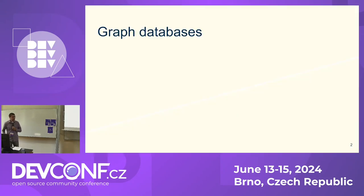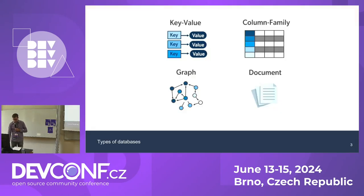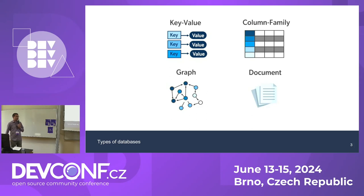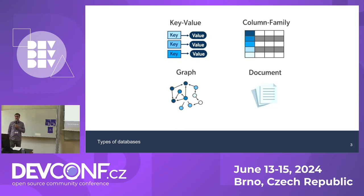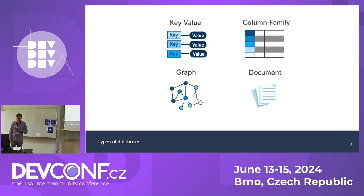In the beginning, I should say what graph databases are. There are different types of databases depending on how we store the data. The typical types you're probably familiar with are key-value like Redis, column family which includes traditional relational databases like SQL, document databases like MongoDB, and the last addition was graph databases.